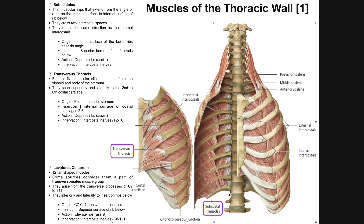The fibers run superiorly and laterally to the costal cartilage of ribs two, three, four, five, and six. These muscles are going to be synergistic with the subcostal muscles in the sense that they're going to depress the ribs or at least assist in that. And that comes into play when you have forced or active exhalation or expiration.